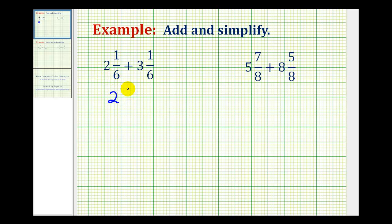So, we'll have two and one-sixth plus three and one-sixth. And now, we'll add the fraction part and then the whole number part. And because we already have a common denominator, we can go ahead and add these two fractions. The denominator is going to stay six and then we'll add the numerators.